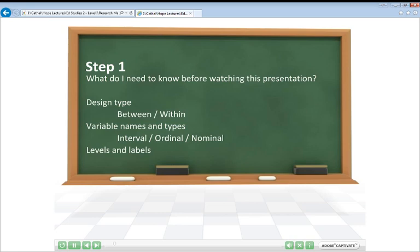Before you go any further, we recommend that you read a relevant chapter in a statistics textbook to familiarise yourself with key theoretical concepts you're going to come across today, such as the different design types between and within, different types of variables — interval, ordinal, nominal — and how levels of data might work or why data might need to be labelled. Once you've read up on these areas and feel comfortable with the statistical theory, then you're ready to view the rest of this presentation. We still recommend you make a note of any term you don't understand.